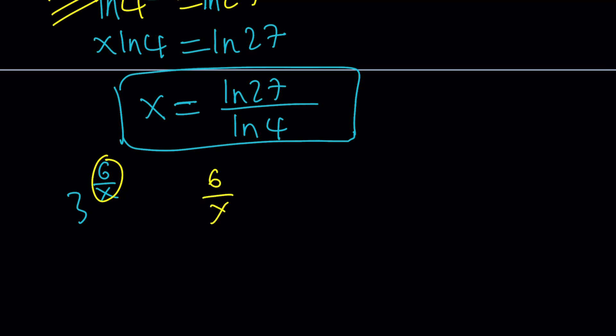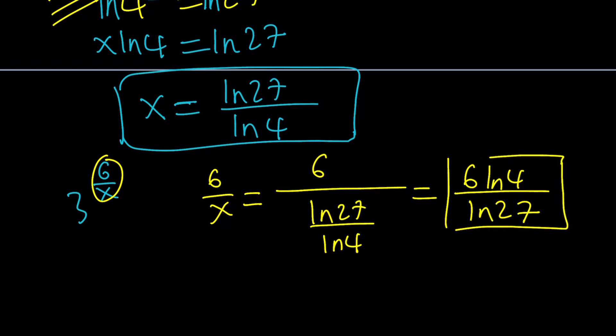What is 6 over x? 6 over ln 27 over ln 4. We can write it as 6 ln 4 over ln 27. Now this is going to be the exponent for 3. If we can get something like a 3, a factor of 3, it will be helpful. I notice that there's an ln 27 at the bottom and there's a 6 here which might turn into a 3 if I simplify this.